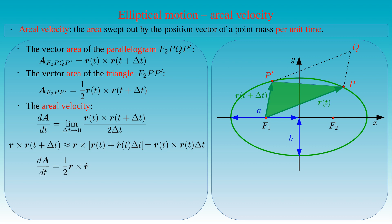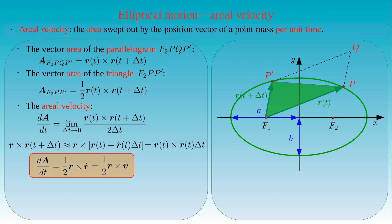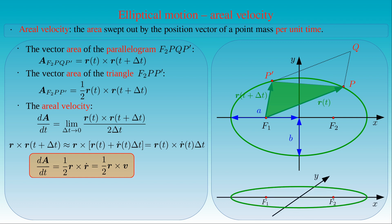We see that the derivative of the area vector A with respect to time is equal to the half of the vector product of R and R-dot. Since R-dot is simply the velocity of the body, the aerial velocity of the point mass is given by the half of the cross product of its position vector and its velocity.